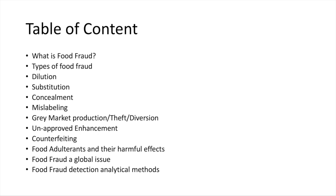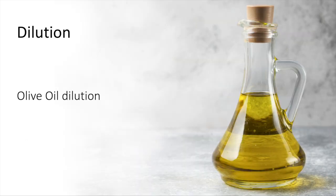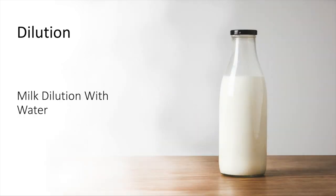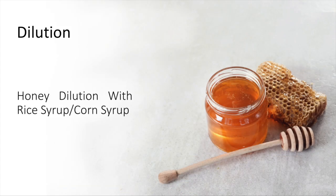Food products can be adulterated in different ways, and dilution is one of them. Dilution is when a cheaper liquid alternative is added to a high-value ingredient. For example, olive oil is diluted with cheaper oils such as rapeseed or sunflower oil, milk is diluted with water, and honey is diluted with rice syrup or corn syrup.